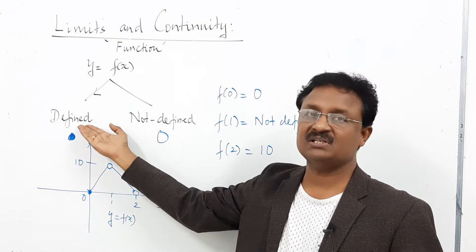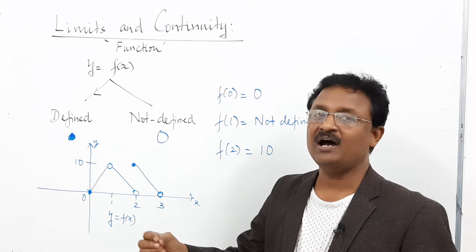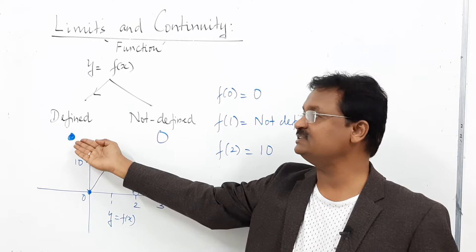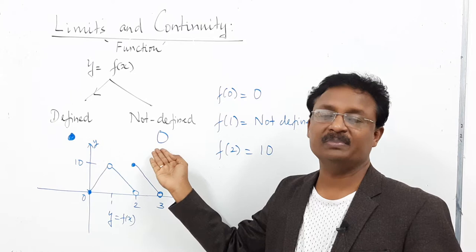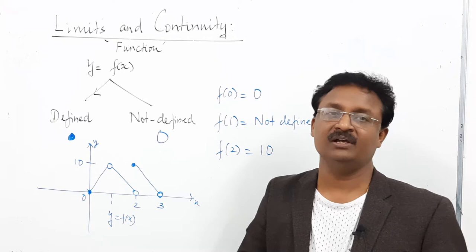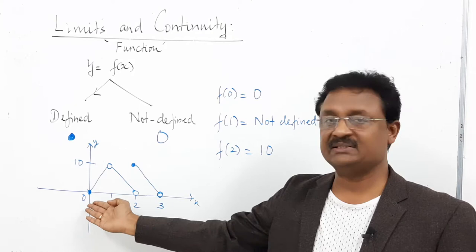For our topic, a function is either defined or undefined. How is this represented on a graph? If it is a closed point on the xy-plane, we call it a defined function. If there is an open circle on the xy-plane at a particular point, the function is not defined, or undefined, at that point.